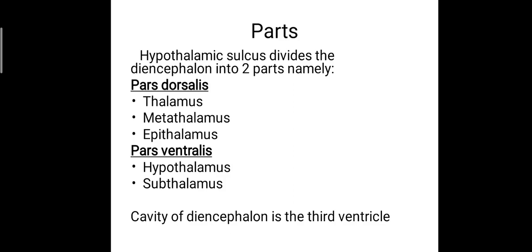The hypothalamic sulcus divides the Diencephalon into two parts. The part above it is termed the pars dorsalis and it consists of the thalamus, metathalamus and the epithalamus. The second part is the pars ventralis, which comes below the hypothalamic sulcus and includes the hypothalamus and the subthalamus. The cavity of the Diencephalon is the third ventricle.